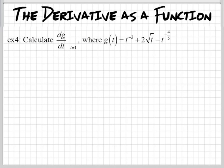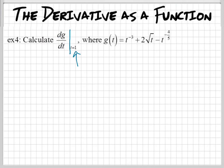Here's another problem, but it's with Leibniz notation, so let's try to get used to it. Sometimes you will see a line right here. What this is saying is: take the derivative of the function g with respect to t, at t equals 1. Pretty much what we're going to do is take the derivative of g and then plug in 1 to see what the slope is right there. It's the same thing we've been doing — it's just written differently. You've got to get used to this notation.